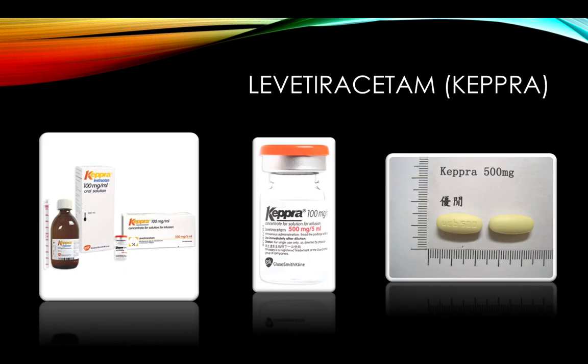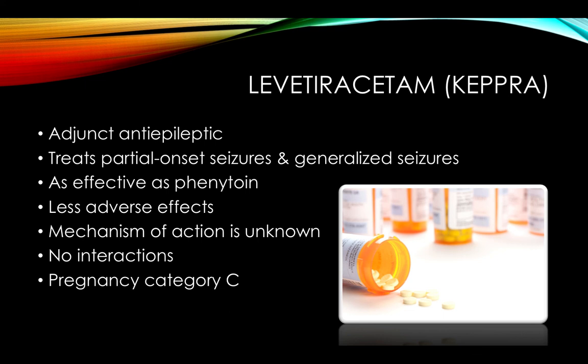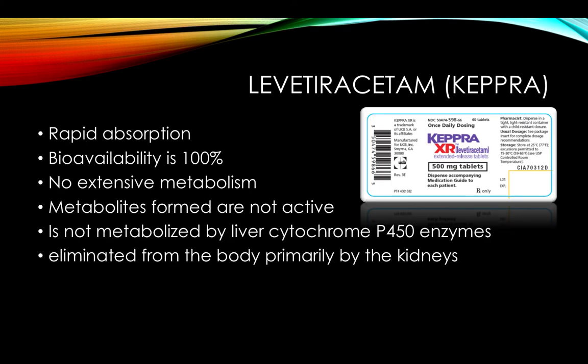Keppra is very similar to Dilantin but with a few differences. It is an adjunct antiepileptic that treats partial onset and generalized seizures, is as effective as Dilantin, has fewer adverse effects, and is the better option for long-term therapy. Its mechanism of action is actually unknown, there are no significant drug interactions, and it is pregnancy category C. Keppra is rapidly absorbed with 100% bioavailability, no extensive metabolism, and inactive metabolites. It is not metabolized by P450 enzymes and is eliminated primarily by the kidneys.